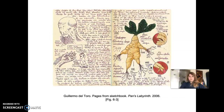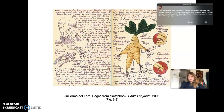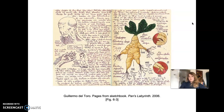Next is Guillermo del Toro's sketchbook — pages from Pan's Labyrinth, 2006. You can see that content from this sketchbook actually ended up in the movie. The monster in the movie had eyes in its hands but not on its face, and you can see how del Toro is writing almost like a diary. His movies include Pacific Rim, Crimson Peak, and Pan's Labyrinth, and his sketchbook contains rather personal writings about his desire for fame alongside sketches of the strange beings that appeared in the film.